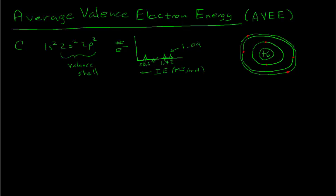We see a peak that's about two units high at 28.6 megajoules per mole, then a big gap, and another peak two units high at 1.72 megajoules per mole, and a last peak also two units high at 1.09 megajoules per mole. On the right I have a picture of what the shell model might look like: a +6 nuclear charge, the 1s electrons in the first ring — two of them — then the n=2 shell, drawn as two close shells, with two electrons in the 2s shell, which is a little closer to the nucleus.